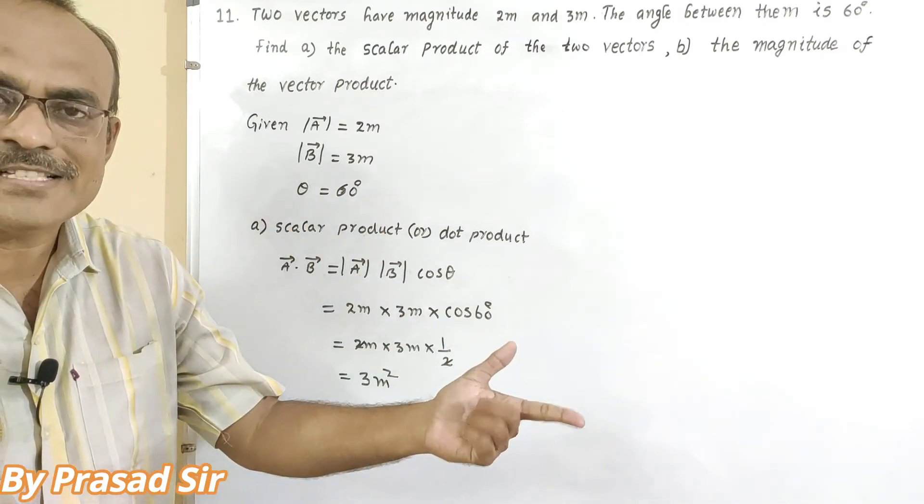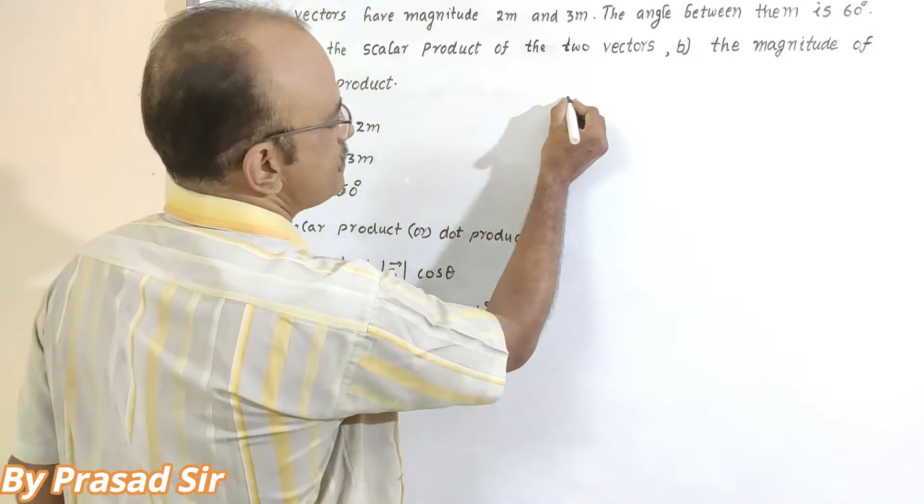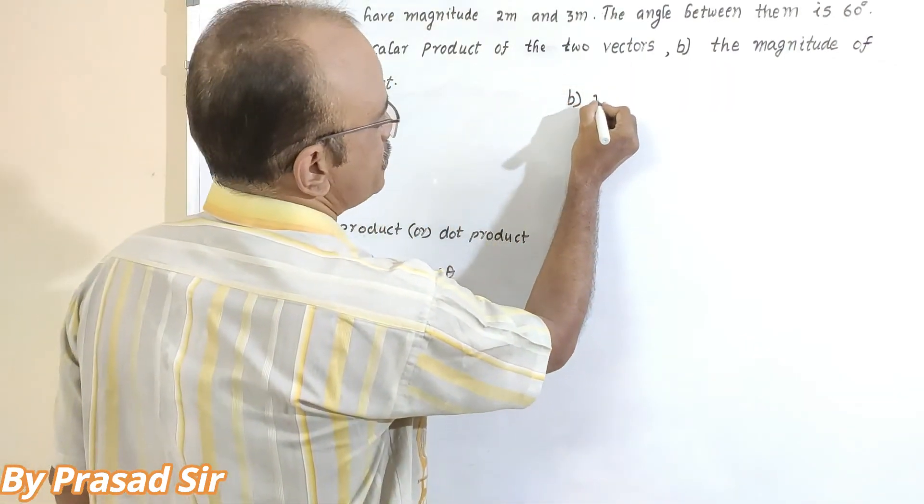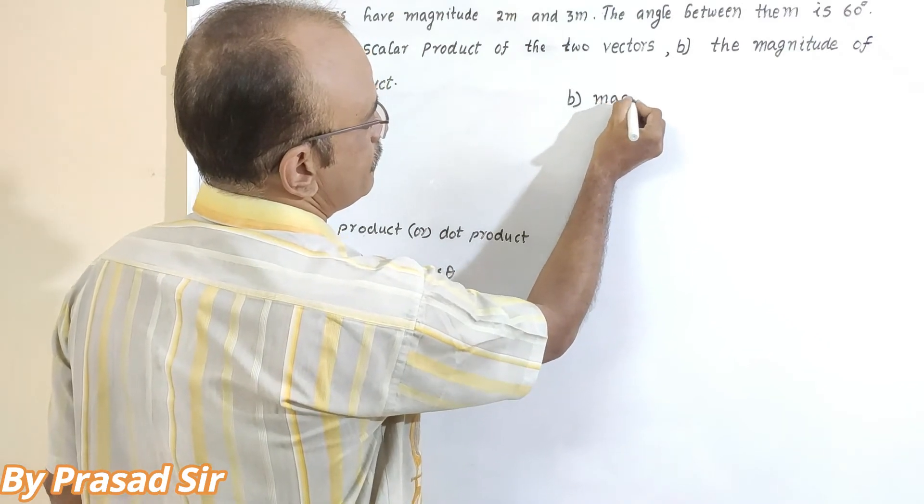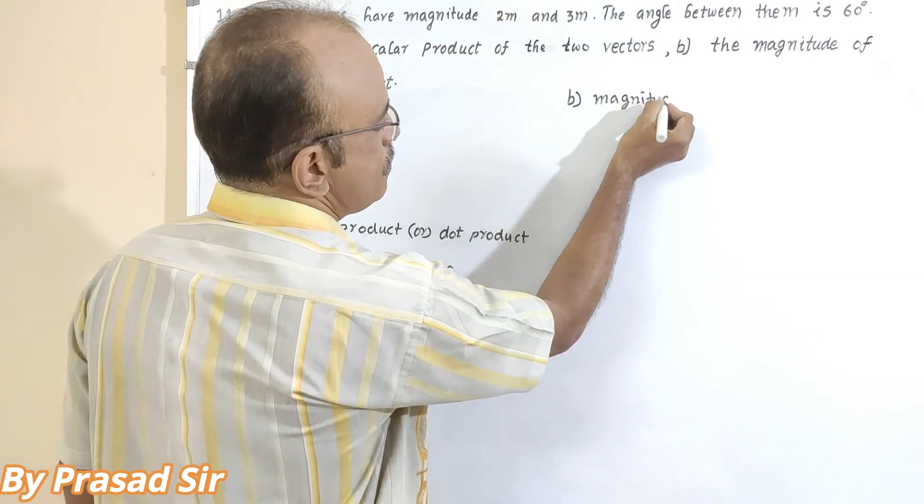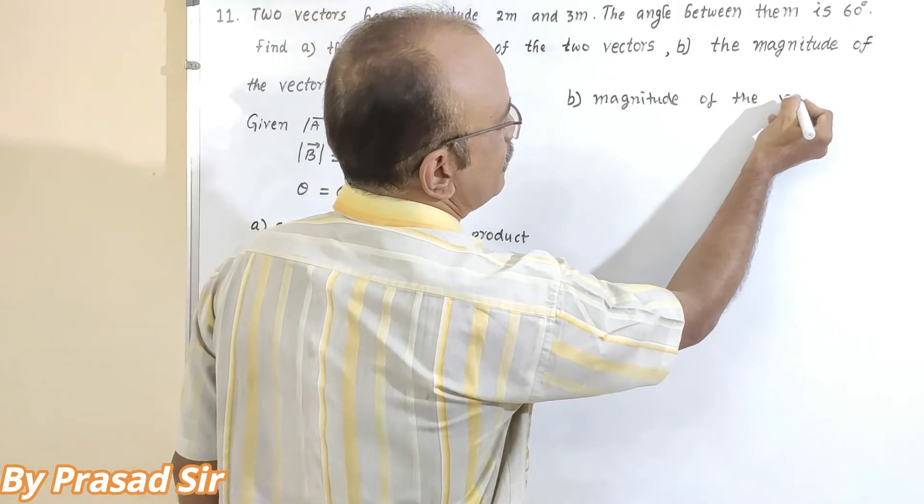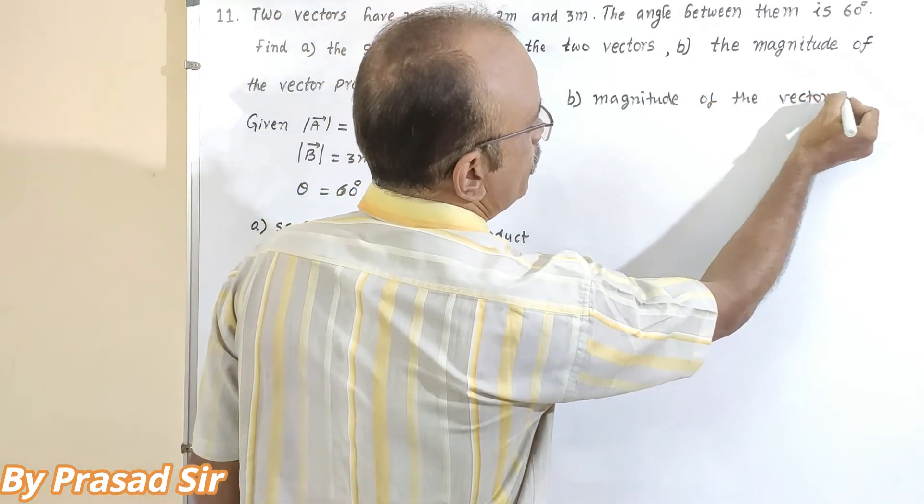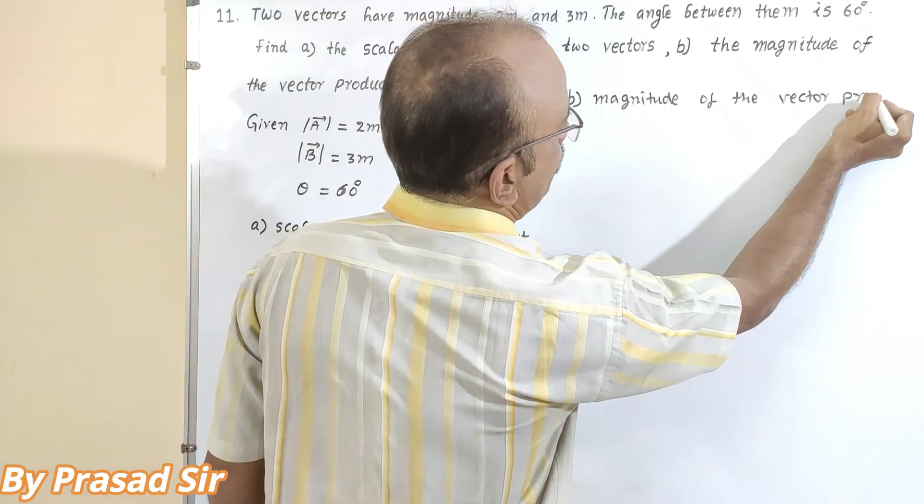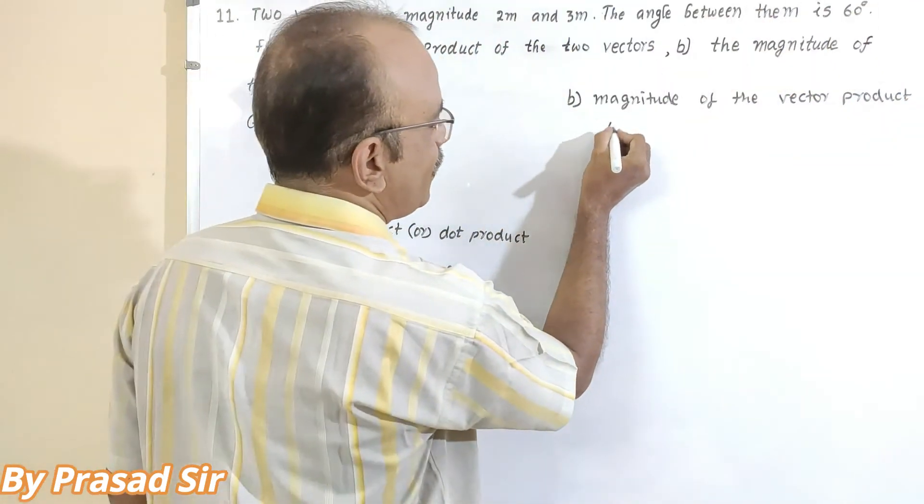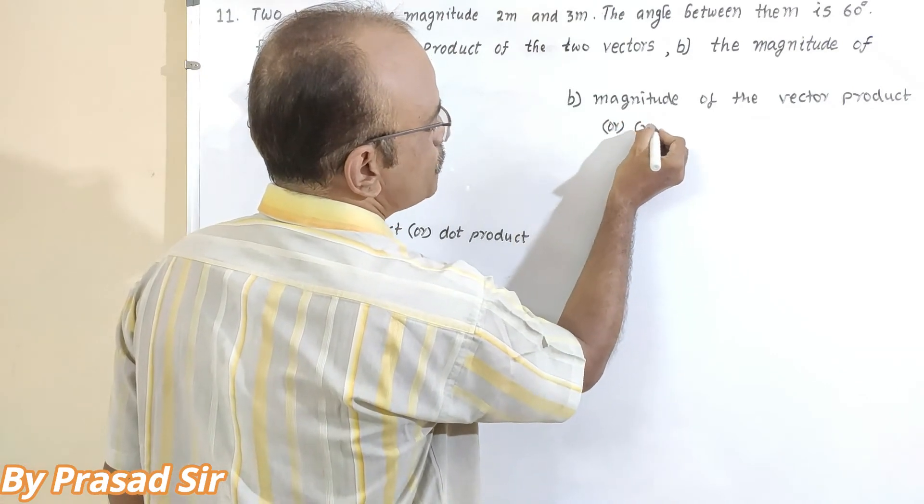Now I want to calculate the answer for B. That is, B, the magnitude of the vector product. Here, magnitude of the vector product, it is also called as cross product.